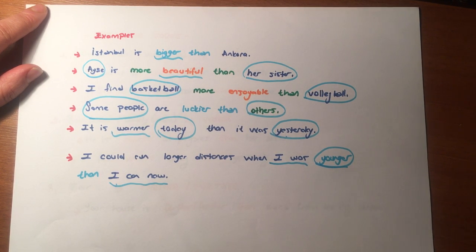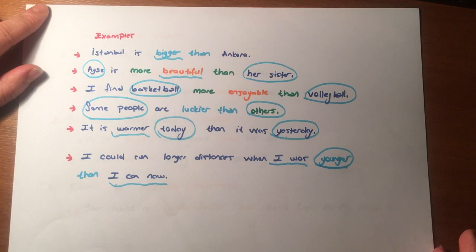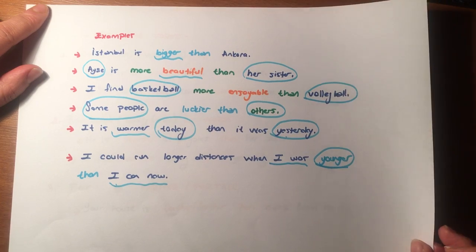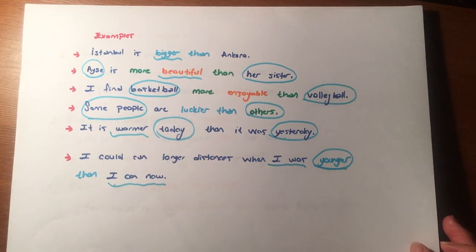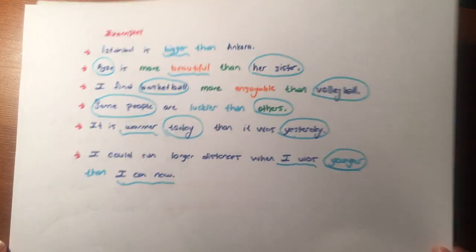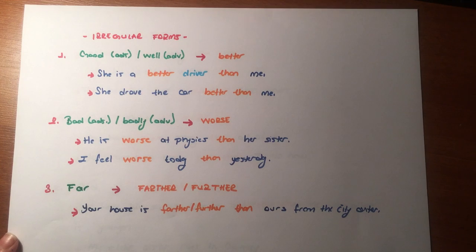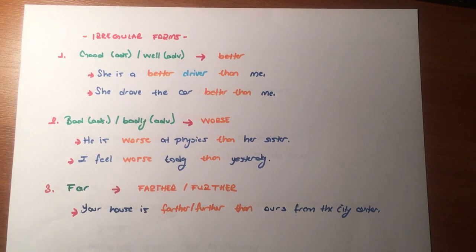I could run longer distances when I was younger than I can now. In this sentence I used the adjective 'younger than I can now' — I compare now and the past. Geçmişle günümüzü karşılaştırıyorum — daha hızlı koşabiliyordum dedik.